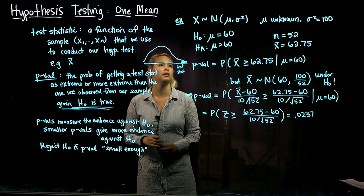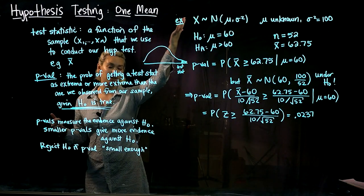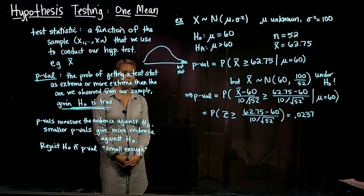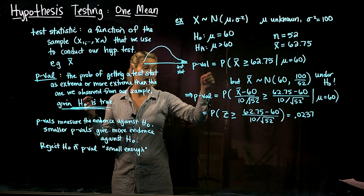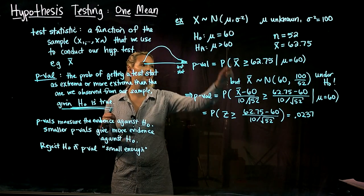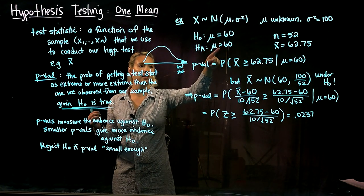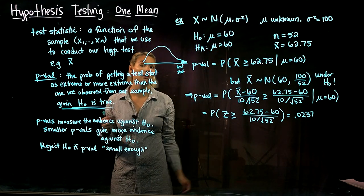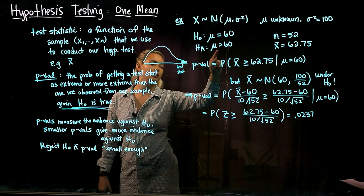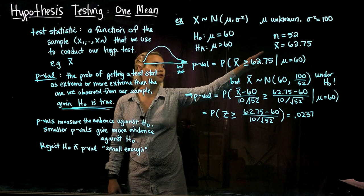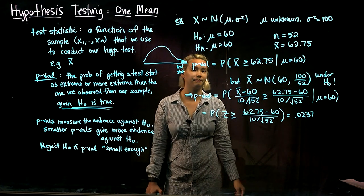Let's see an example of calculating the p-value. We have a normal distribution with mean mu and variance sigma squared, where mu is unknown and sigma squared is known and equal to 100. Our null hypothesis is mu equals 60, and the alternative is the composite hypothesis mu is greater than 60. We collect a sample of size 52 and calculate the sample mean, which turns out to be 62.75.